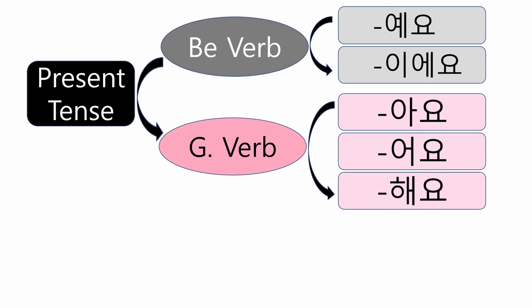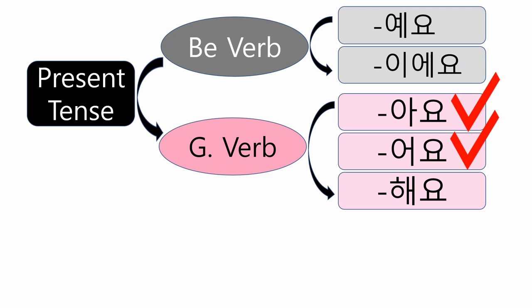안녕하세요. Welcome back to ULEP Korean class. In lesson 12 and 13, you learned the conjugation of the ending 아요 and 어요 to make the present tense of verbs. Today, you will learn the third form 해요.